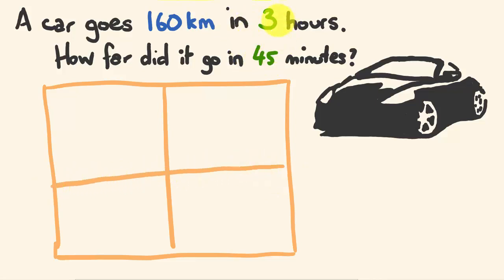This particular time unit is in hours, and this particular time unit is in minutes. We're going to have to make them into the same. I'll show you what I mean in a second. So this is 160 kilometers, and it is in 3 hours. Now we're going to put in our 45 minutes here, but I need to convert this across to hours.